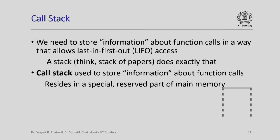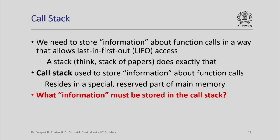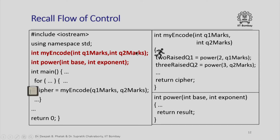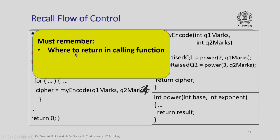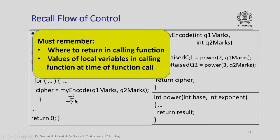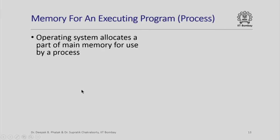The computer uses a call stack to store information about function calls, and this call stack resides in a special reserved part of main memory. The key question is: what information must we store? We need to remember where to return in the calling function, and we must also remember the values of various local variables in the calling function at the time the call was made, so that execution can resume correctly after the function returns.